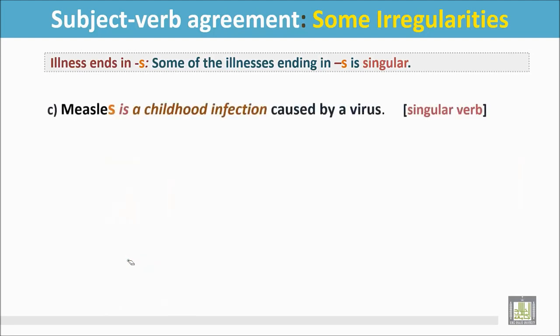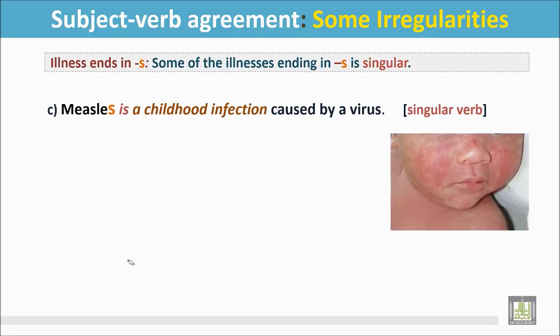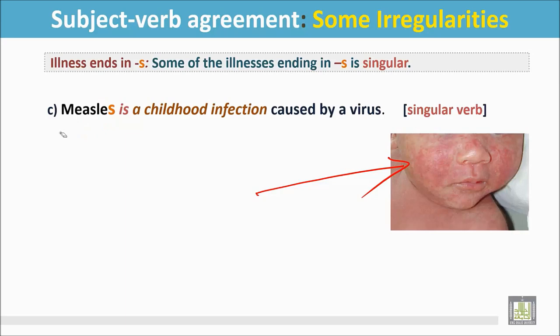Number C: Measles is a childhood infection caused by a virus. In this picture, we see a child affected by measles. The name of the disease ends in S, but it is not plural. It is a singular noun, so the verb is singular.